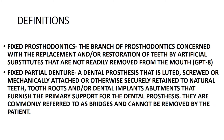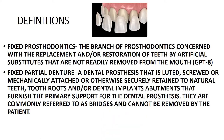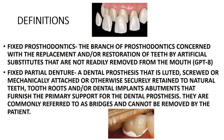The next definition: what is FPD, or fixed partial denture? It is a dental prosthesis that is luted, screwed, or mechanically attached. Breaking this down: 'luted' means fixed with a luting agent, that is cementation. An example is veneers — you do the crown preparation, apply the luting agent, and fix the crown onto it.